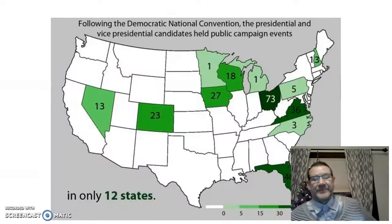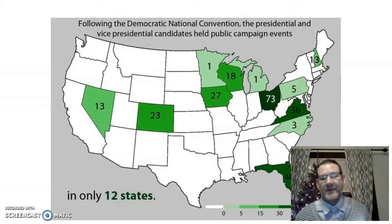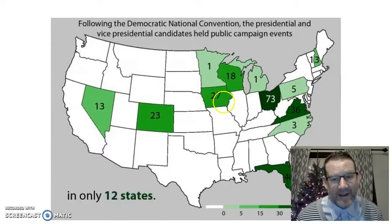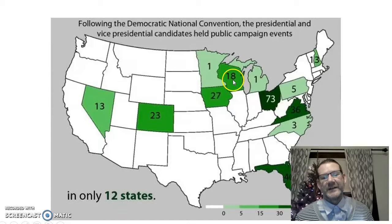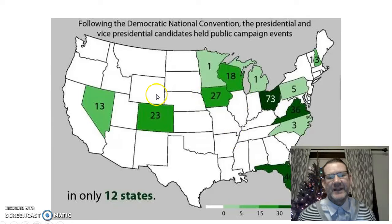Looking at a map of the Obama-Romney 2012 campaign — and similar patterns hold for Clinton and Trump — where did they go? Basically all swing states. Wisconsin got 18 visits, Ohio got 73, Pennsylvania got 5, and candidates also went to New Hampshire, Colorado, Nevada, Florida, Virginia, and Iowa. Presidential candidates will go to California or Texas, but they go there just to raise money. For public campaign events — rallies, where you go to rally for votes — they are going to swing states.